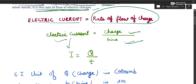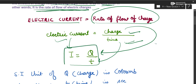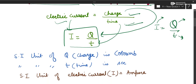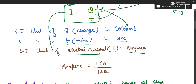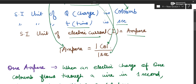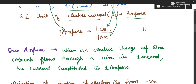The symbol of electric current is I, electric charge is Q, and time is T. The formula to use in numericals is I = Q / T. The SI unit of charge is coulomb, the SI unit of time is second, and the SI unit of electric current is ampere. Therefore, one ampere equals one coulomb per second — this relation must be memorized.